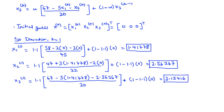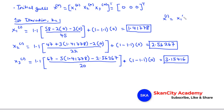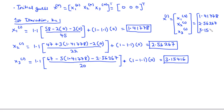At the end of the first iteration step, x(1) = [x1(1), x2(1), x3(1)] = [1.41778, 2.56267, 3.15416].